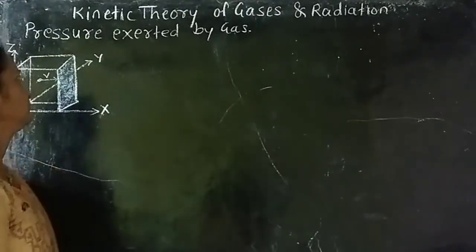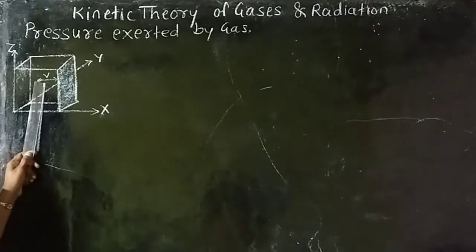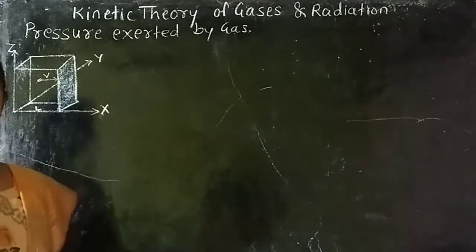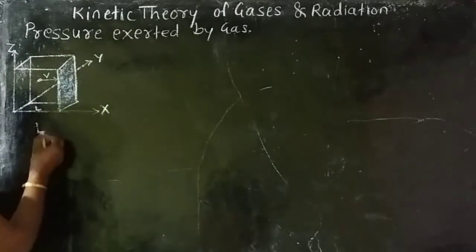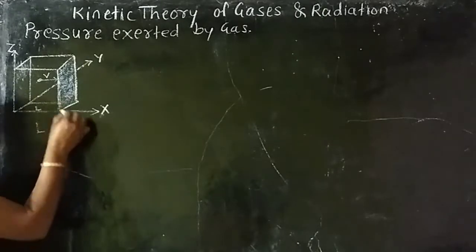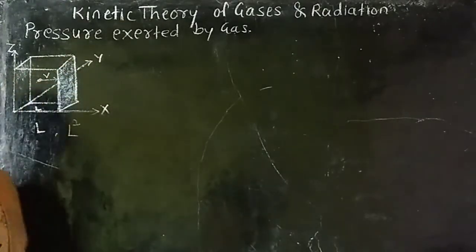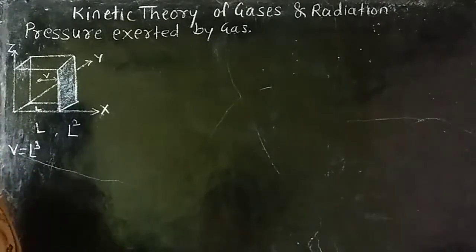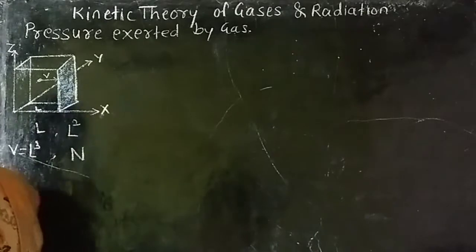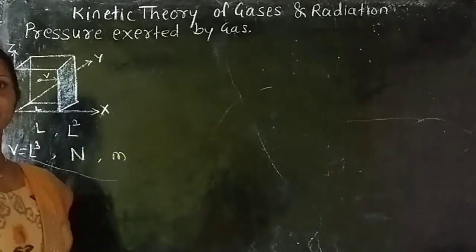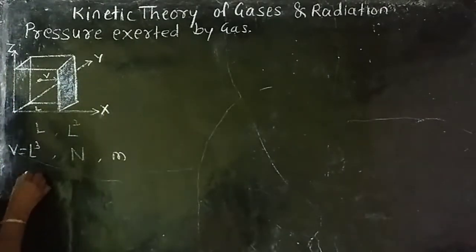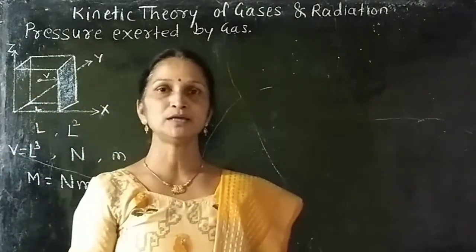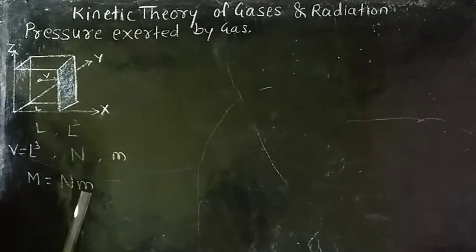For that, we will derive the expression. Consider a cubical gas container having side length L. L is the length of the edge of the box. L squared is the area of each face of the cube. L cubed is equal to the volume of gas. This gas consists of N number of molecules. Small m is the mass of each molecule. Therefore, capital M is equal to the number of molecules times the mass of each molecule — that is, M = N × m — which gives the total mass of the gas.